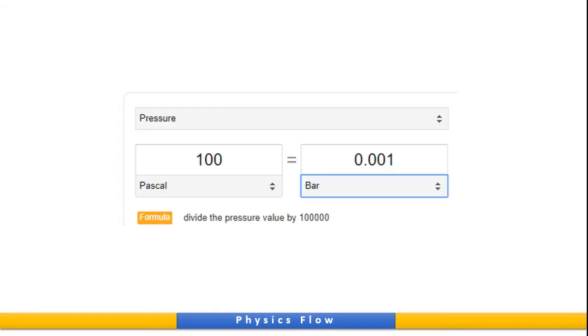Let's go to the conversion of Pascal into bar. We have 1 millibar equal to 100 Pascal equal to 0.001 bar. That is 1 millibar. 100 Pascal equal to 1 millibar.